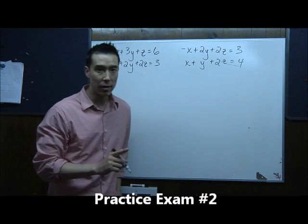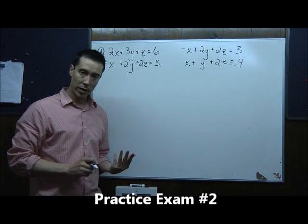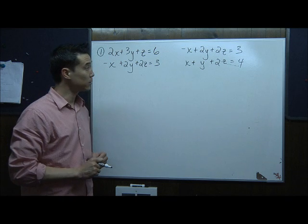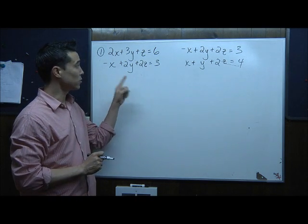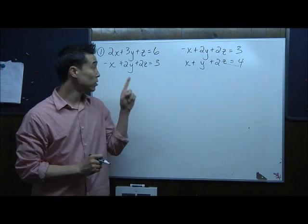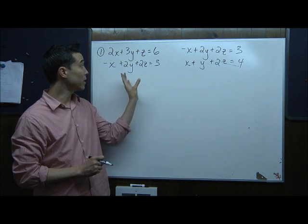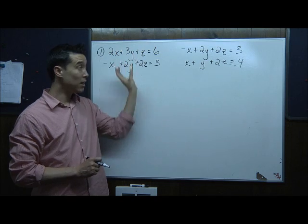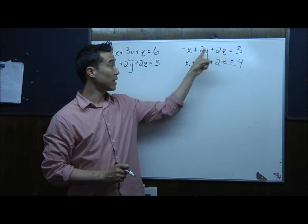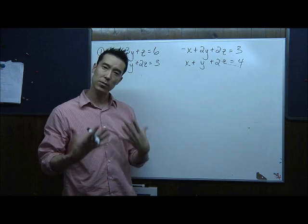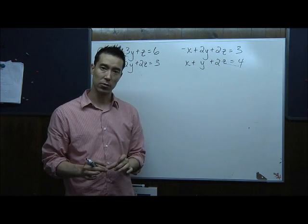Taking a look at number one, we have a system of three equations and three unknowns. To handle this, we take one equation — in this case the second one, negative x plus 2y plus 2z equals 3 — and pair it with the first equation. Over here, I used that second equation again and paired it with the third equation. You choose one equation and pair it with the other two.